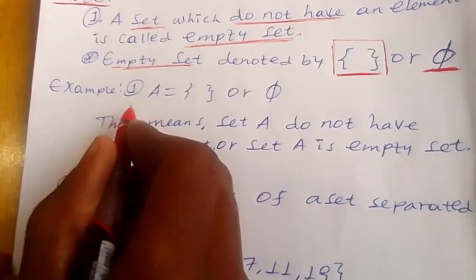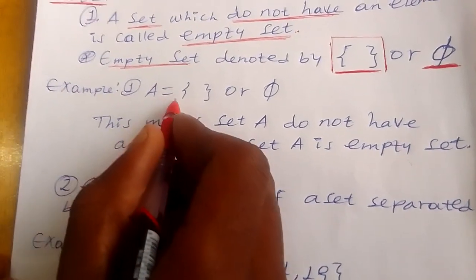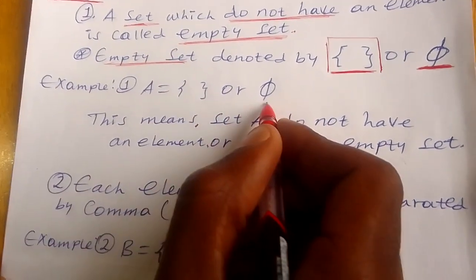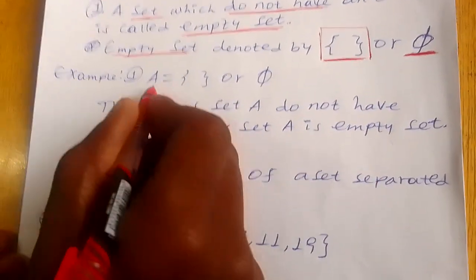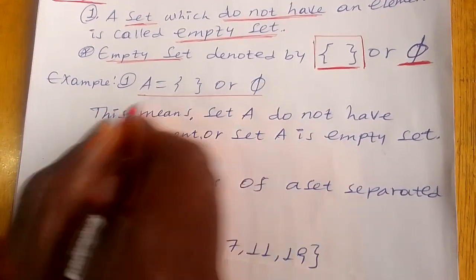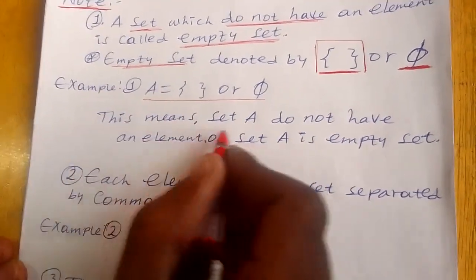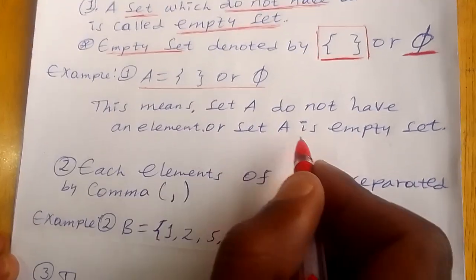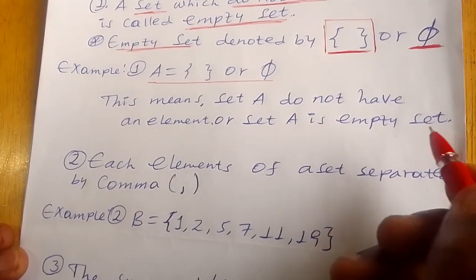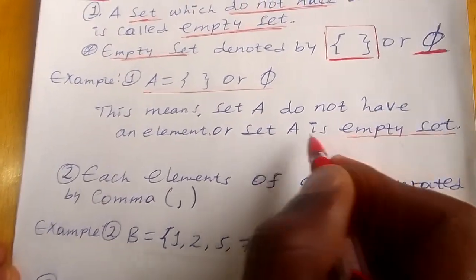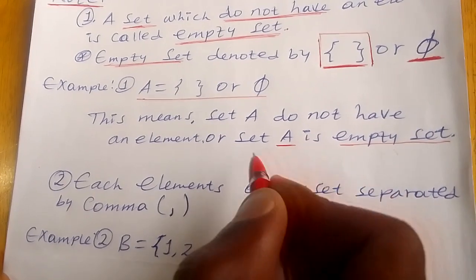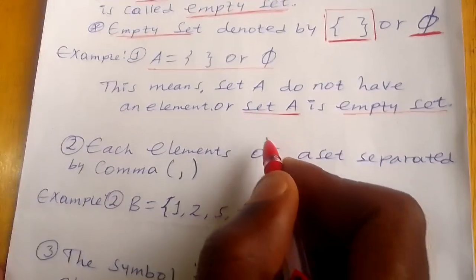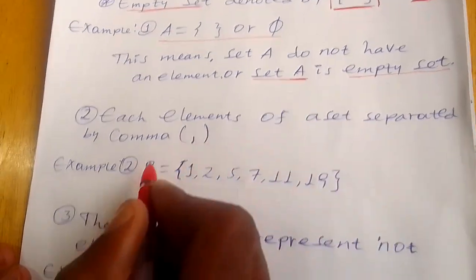For example: set A is equal to the empty set. This means set A does not have any element, or set A is an empty set.